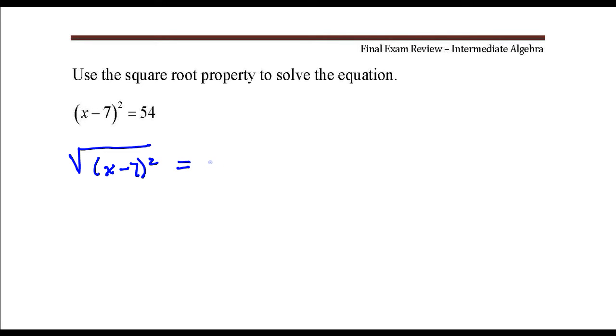Remember when you take the square root it's plus or minus. The square root of x minus 7 squared is just x minus 7. There's no more radical anymore and there's no square.